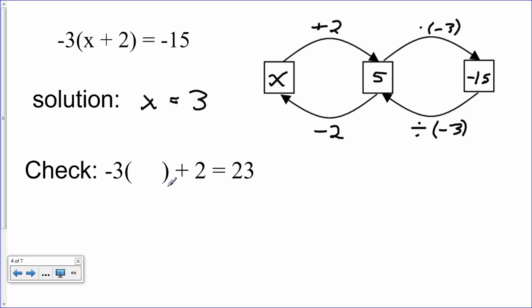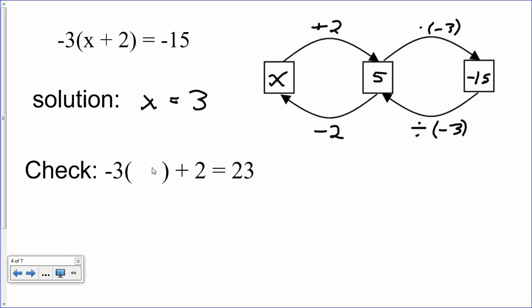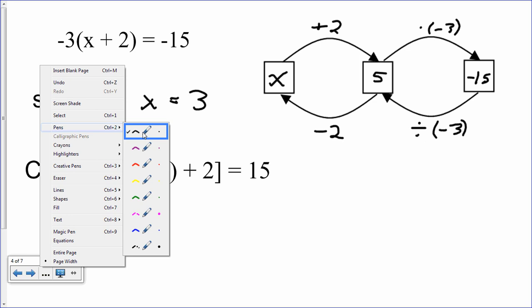And so, now we'll check that. And I just realized that I didn't modify the check when I copied and pasted for this example. So, rather than rewrite the whole thing, I'll just do this. All right. So, in place of the variable, we're going to put the solution that we have found, which is 3.